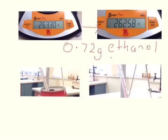That ethanol had a temperature change from 21 to 51 degrees. So our delta T equals 30 degrees. So in this case, 0.72 grams of ethanol produced a temperature change in the water of 30 degrees.